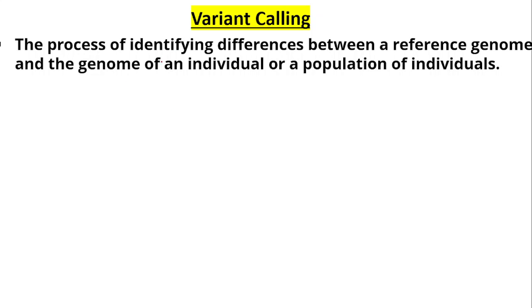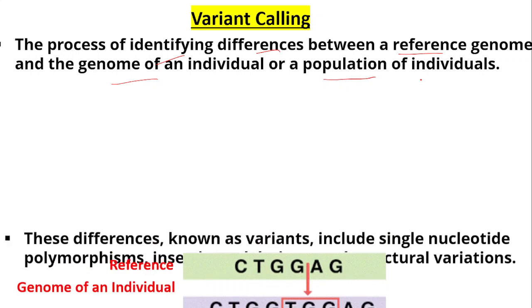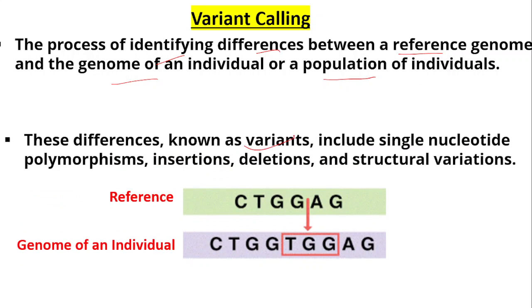Now let's talk about variant calling. Variant calling is the process of identifying differences between a reference genome and the genome of an individual or a population of individuals. These differences are known as variants. They include single nucleotide polymorphisms, insertions, deletions, and structural variations. As you can see, this here is the reference sequence.